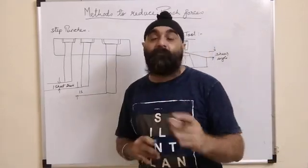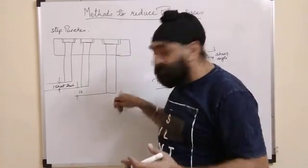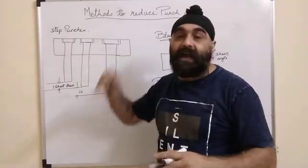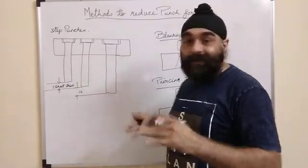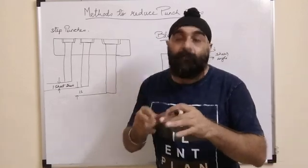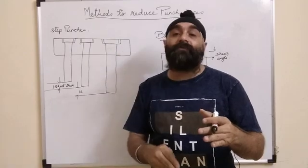What will happen is the bigger punch will enter into the sheet, finish the cutting operation, then another punch will start entering. At a time there will not be force generated on the press. The press will have gradual increment of force, so this will reduce the punching force very easily.